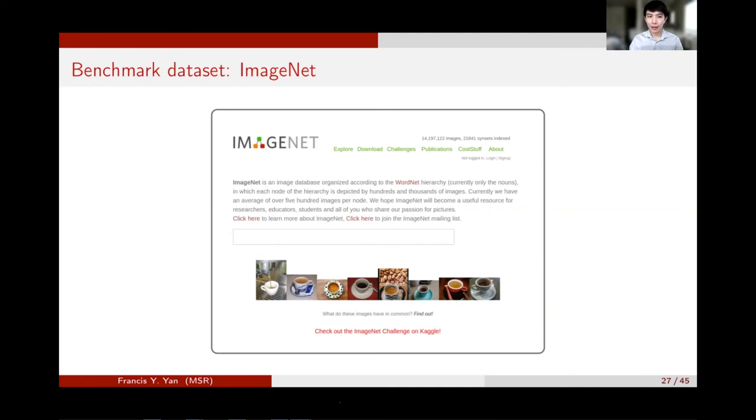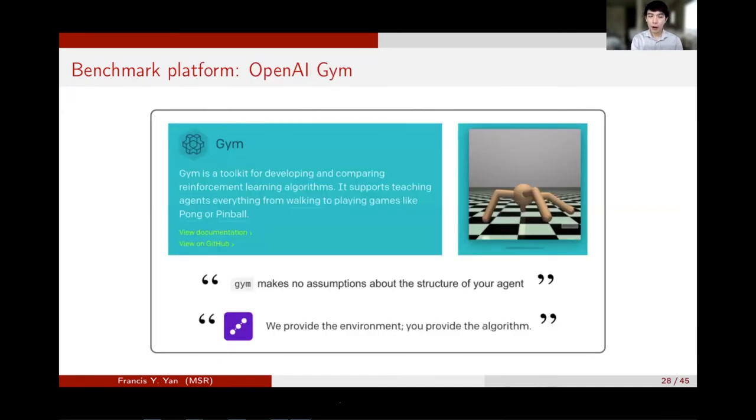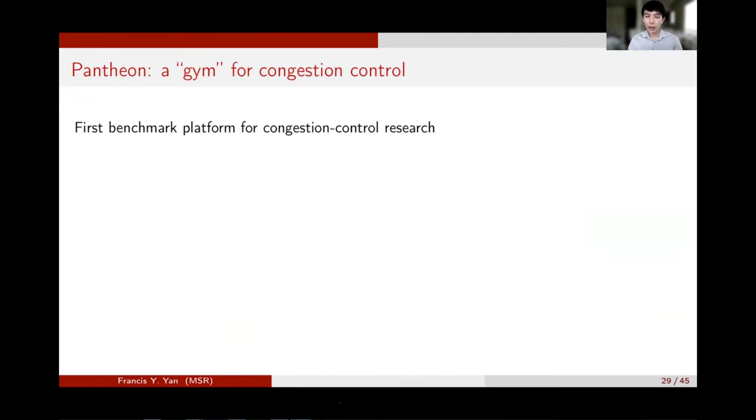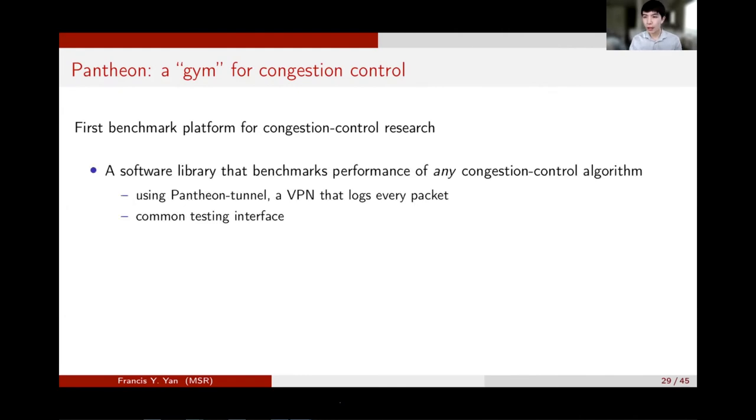Before we try to design a congestion control algorithm using ML, especially RL, let's take a moment to recall the importance of benchmarks in machine learning. For example, we all know about ImageNet, right? A benchmark dataset of labeled images. It's been given huge credit for the success of computer vision. And in the field of RL, training typically requires more than data. The closest equivalent to ImageNet in RL is something like OpenAI Gym. It's a benchmark platform containing a collection of training environments for RL research.